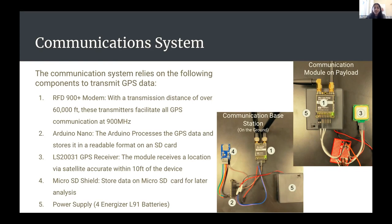That is our communication system. And if we were to lose transmission of data in between, we have a trajectory model that should help us stay within a reasonable range so we can still recover the package.